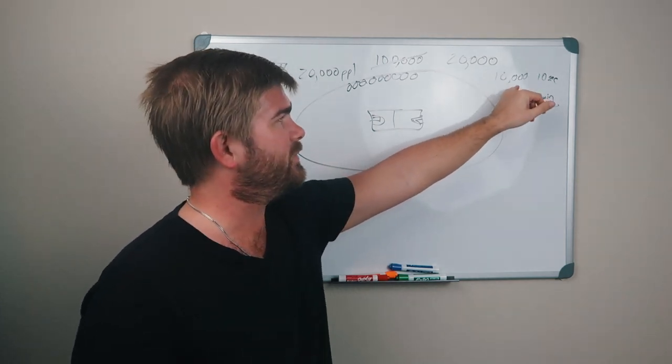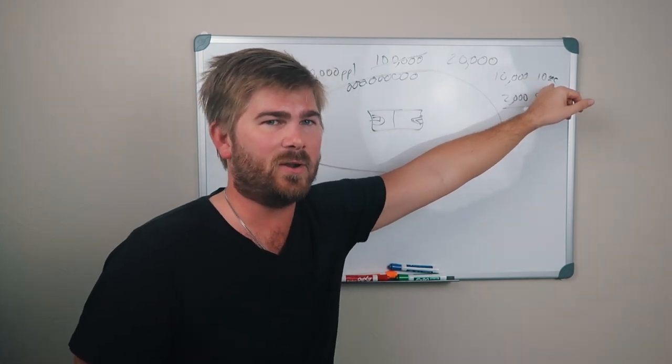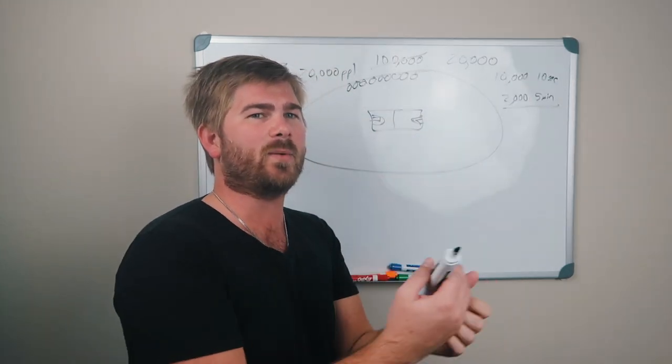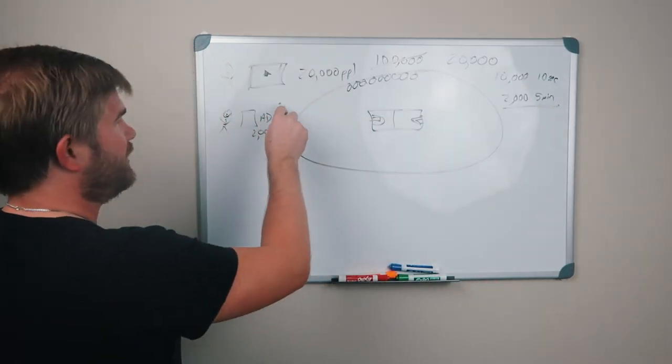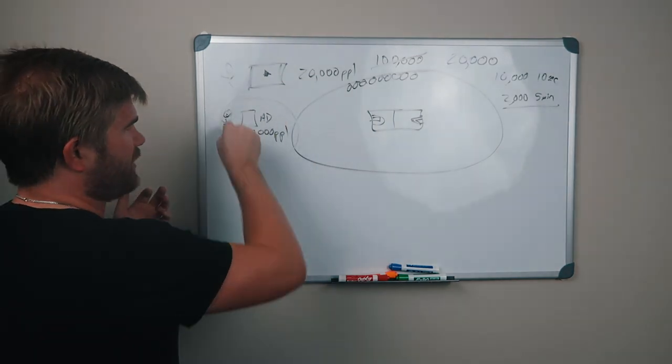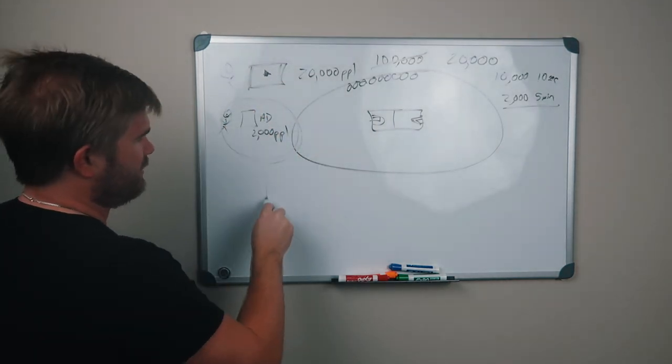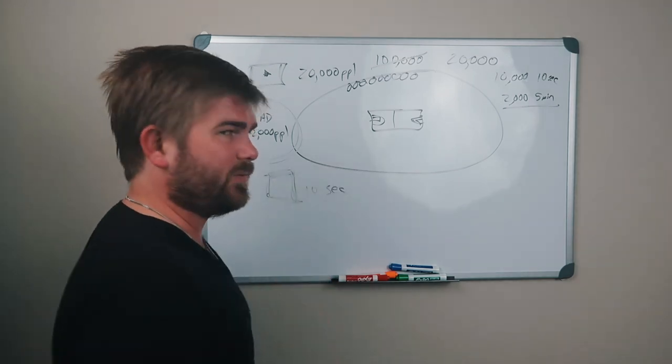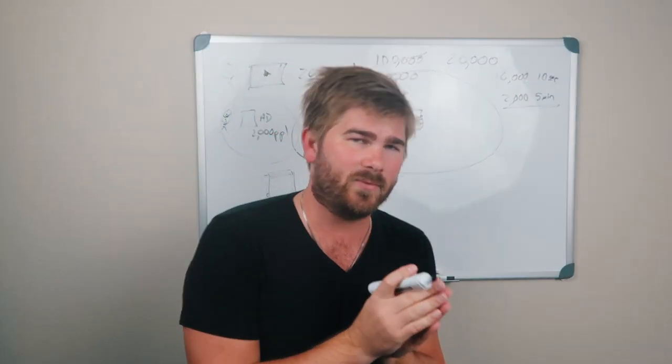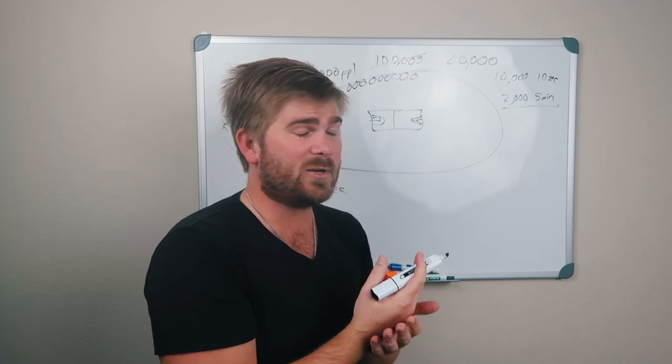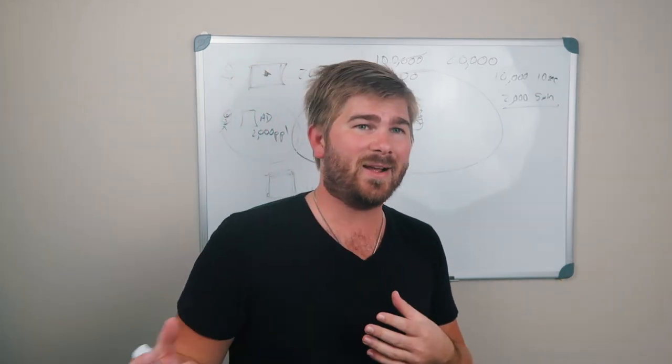The good news is if you've got someone who watched 10 seconds of a video, you can still retarget them with another piece of content. So this would be the hyper targeted people, and then there's the people who watched 10 seconds. So for the 10 second viewers, what you want to do is you want to pull them along. Maybe it just wasn't the right time for them to consume the content.